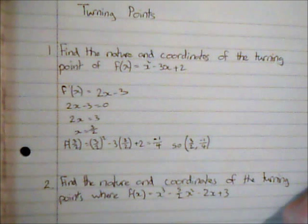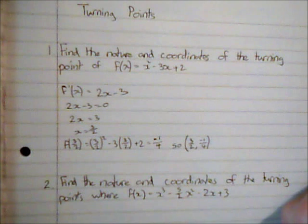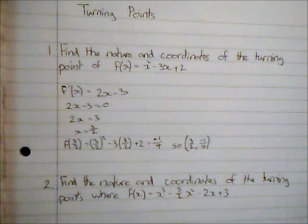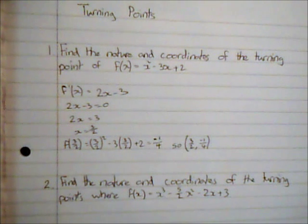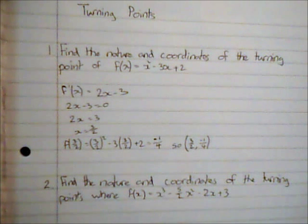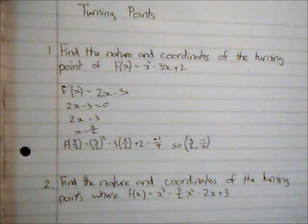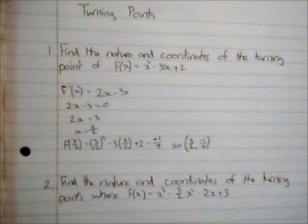It asked me to find the nature of the turning point — this means is it a maximum point or is it a minimum point. At a maximum point the gradient is changing from a positive gradient to a negative gradient, so the rate of change of the gradient is negative. At a minimum point the gradient is changing from negative to positive, so the rate of change of the gradient is positive.